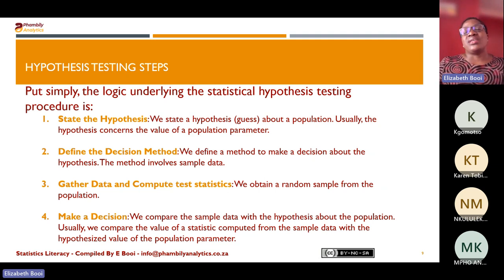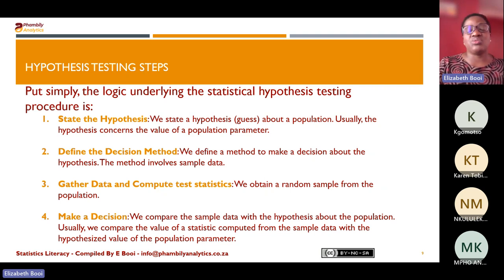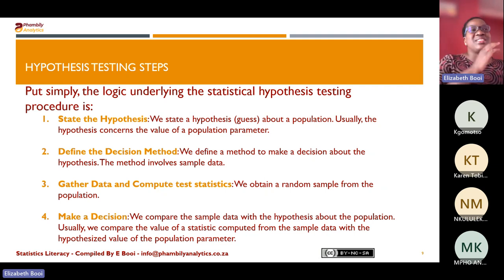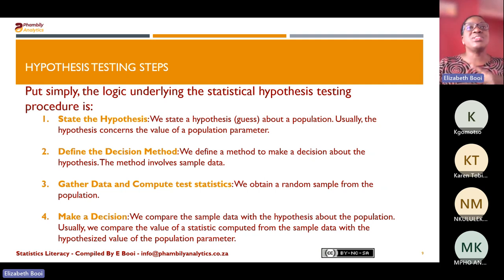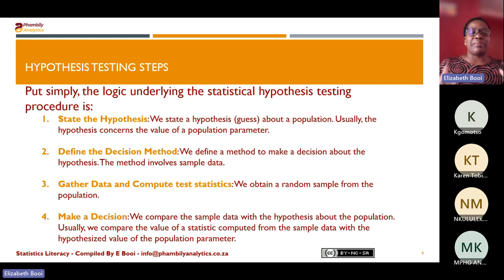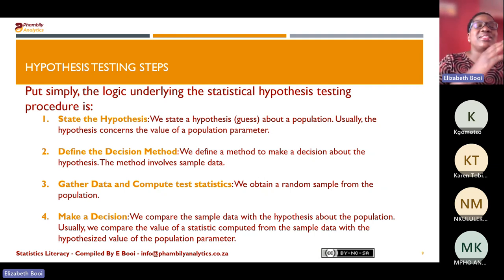Step two is making your decision, which is based on several things: your level of significance (alpha), your critical value, and whether you're doing a z-test or a t-test. Remember: for unknown standard deviation we use the t-test; for known standard deviation we use the z-test.